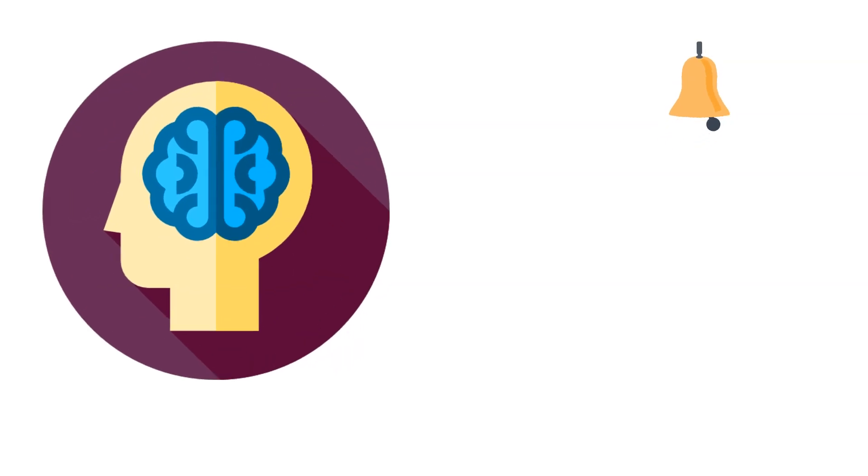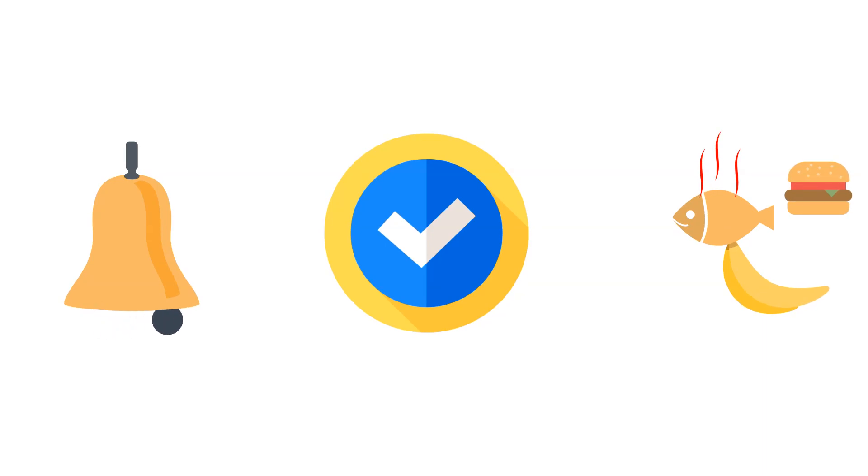But how does this happen in the brain? Well, when a neutral stimulus, like the bell, is repeatedly paired with an unconditioned stimulus, like food, neural connections in the brain are strengthened. This process, known as synaptic plasticity, allows the once neutral stimulus to trigger a similar response. It's a prime example of how our brains are wired to associate and learn from experiences.